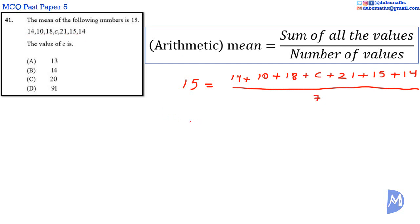It follows that 15 is equal to: 14 added to 10 is 24; 24 plus 18 is 34; plus 21 is 42; 42 plus 21 is 52; then 62; 63; 63 plus 15 is 73; 78; 78 plus 14 is 92. So we have 92 plus C over 7.